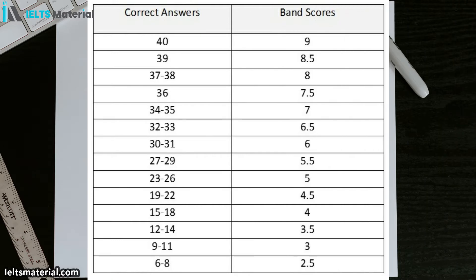And moving on to general, you can see that you do need to get more correct to get a higher band score, starting right at the top. To get a band score 9 here, you need to get everything correct. And you can see the 7 to 6.5 range, it's a little bit higher.